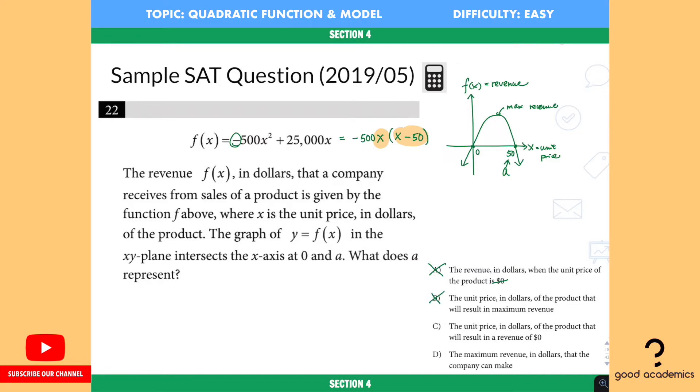So that would not be true, and this is why graphing the quadratic function is so important because now you are in a prime position to make interpretation and there is no way that you would get it wrong. Let's look at C. The unit price in dollars of the products that will result in a revenue of zero. That sounds pretty good. So let's keep that for the moment and let's look at D.